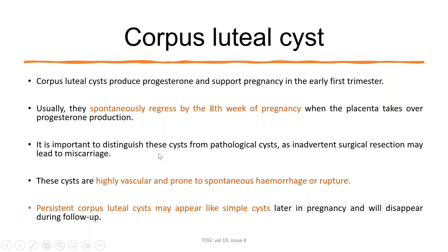The first common adnexal mass is the corpus luteal cyst. The most important thing is that it produces progesterone and supports the pregnancy in the first trimester. It can spontaneously regress by eight weeks when the placenta takes over progesterone function. It's very important to differentiate corpus luteal cyst from pathological cysts because inadvertent surgical resection can lead to miscarriage. The corpus luteal cyst is highly vascular and prone to spontaneous hemorrhage or rupture.